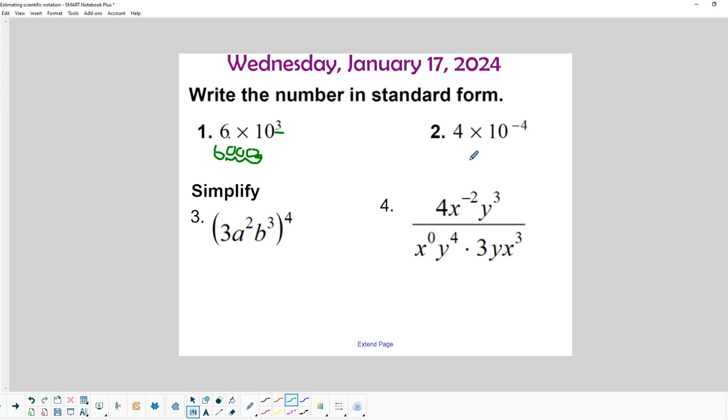The next one: the decimal is going to start right behind that 4, but we're going to move it to the left because of this negative 4. So 1, 2, 3, 4 is where the decimal is going to go, and we are inputting three 0s in front of that 4. So 0.0004.